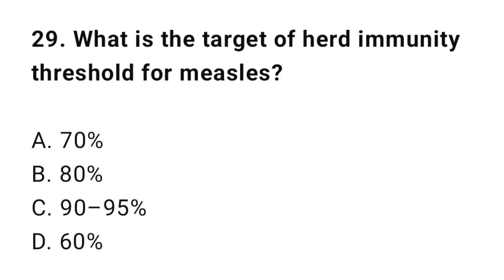Question number twenty-nine: What is the target of herd immunity threshold for measles? The correct option is C: 90% to 95%.